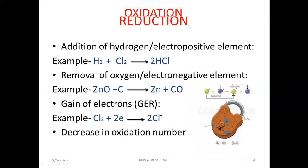Now, reduction is just opposite to oxidation. Addition of hydrogen or an electropositive element is reduction. For example, H2 plus Cl2 gives HCl. Here, H2 is added to chlorine and it forms hydrochloric acid. So, this process is reduction.